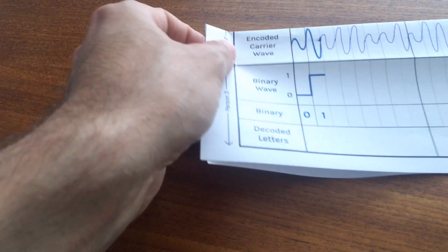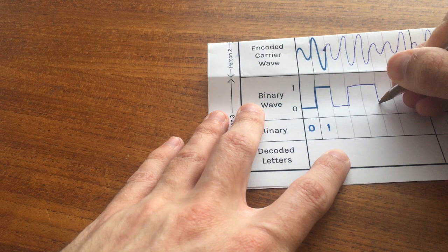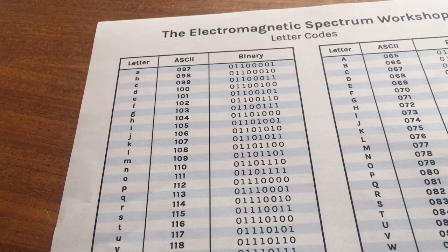Player three's job is to decode the wave back into binary and then into letters. Based on the carrier wave, wherever the amplitude is small they put a zero, wherever it's large they put a one. Filling out the binary and comparing with the ASCII codes, the result is Y-A-Z — and yes, that's right!